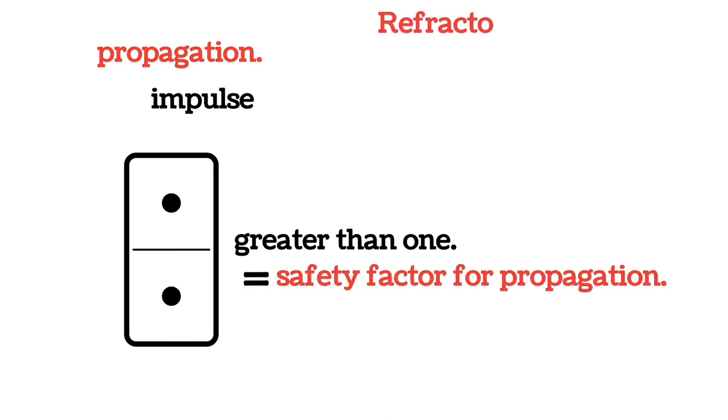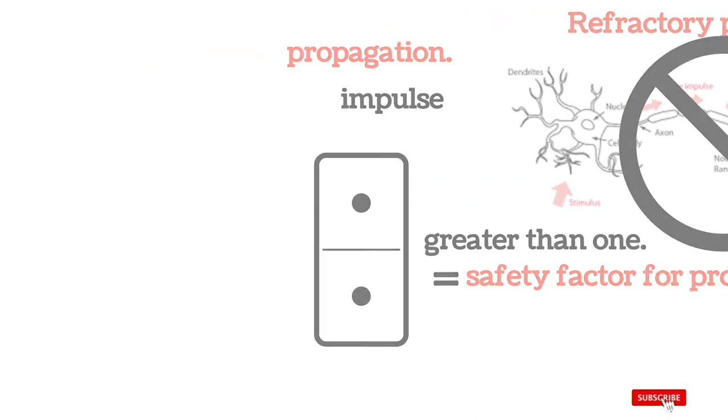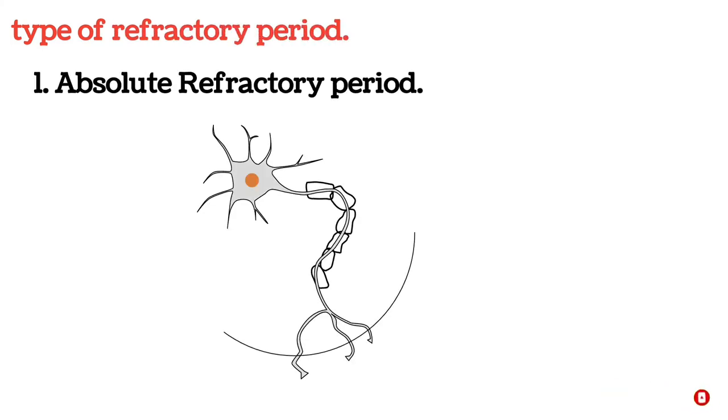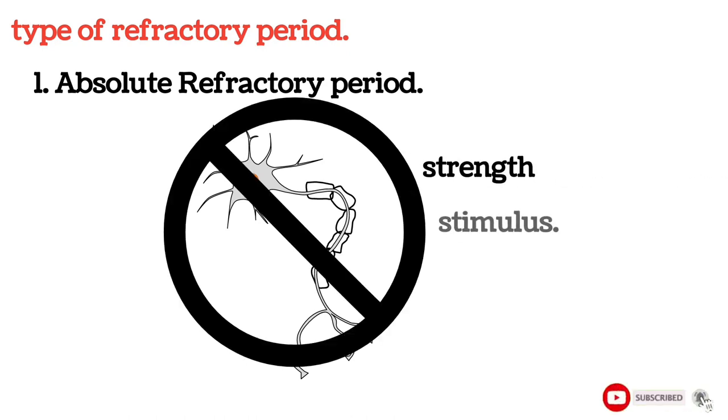Refractory period is the period at which the nerve does not give any response to a stimulus. Refractory period is of two types. Absolute refractory period is the period during which the nerve does not show any response at all, whatever may be the strength of stimulus.